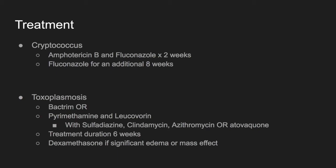Treatment for cryptococcal meningitis is amphotericin B plus fluconazole for two weeks, followed by an additional eight weeks of fluconazole. For toxo, Bactrim is the first-line treatment unless there's an allergy or contraindication, with second-line options available. Treatment duration is six weeks. Steroids can also be given if there's significant edema or mass effect.